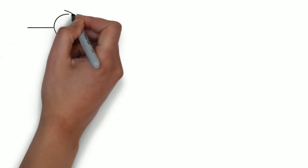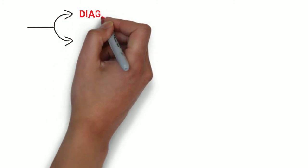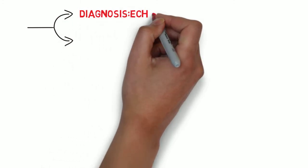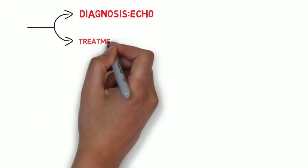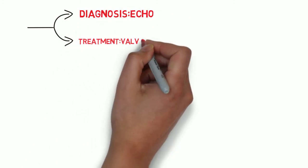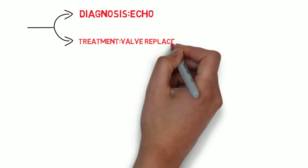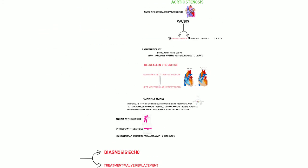The diagnosis of aortic stenosis is made by echocardiography, while the treatment is valve replacement. Importantly, whenever you encounter anemia with production of schistocytes, it is an indication for valve replacement.